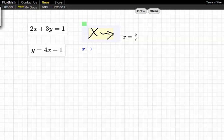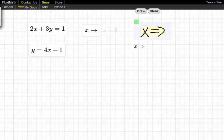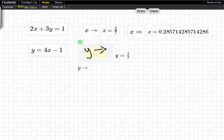A single arrow gives the exact solution, a double arrow gives the approximation, and the same for y.